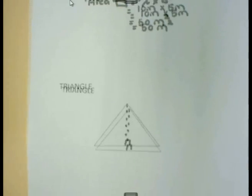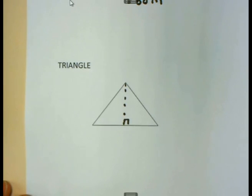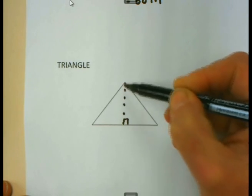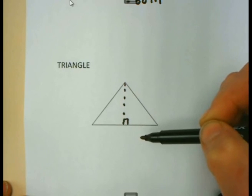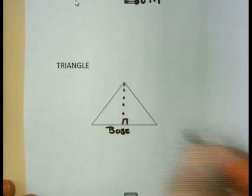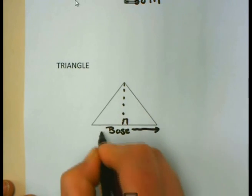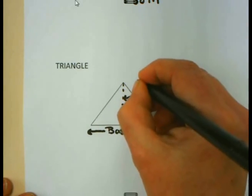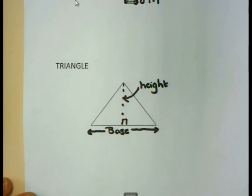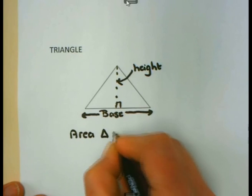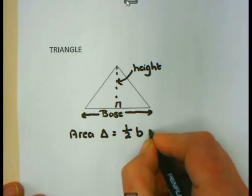Let us now look at the area of the triangle. If you are given a triangle and there is no perpendicular side, it is always possible to construct one by drawing a line at 90 degrees to any of the other sides. I refer to the full side as the base of the triangle, and the perpendicular line as the height of the triangle.